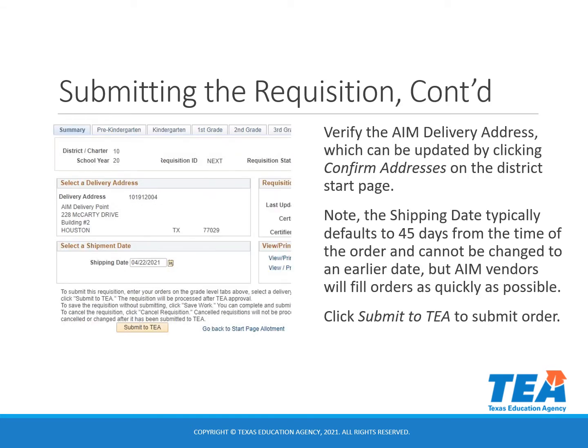It would also be a replacement cost if any state-owned AIM is lost or damaged and it wasn't consumable. On the summary tab, you can also verify the AIM delivery address is correct. If you need to change that, you can do so by clicking 'Confirm Addresses' on your district start page. Note the shipping date typically defaults to 45 days from the time of the order and cannot be changed. During the summer, that default date is going to be the first day of school, and although this can't be changed to an earlier date, AIM vendors will fill orders as quickly as possible.